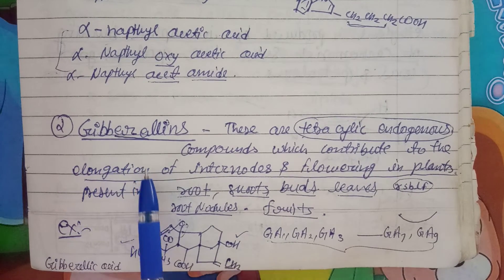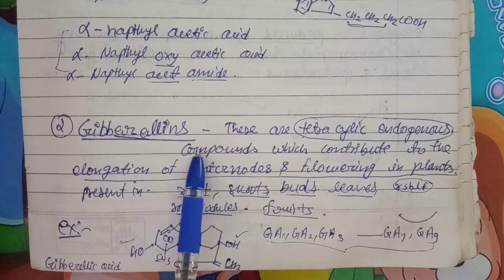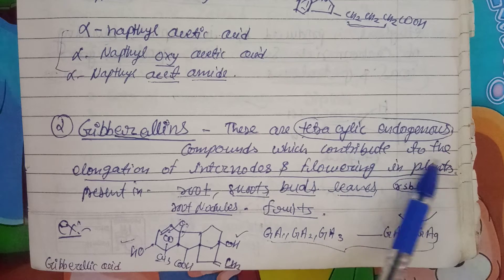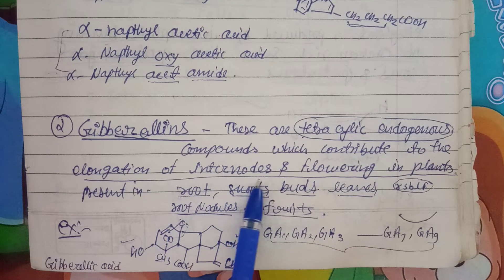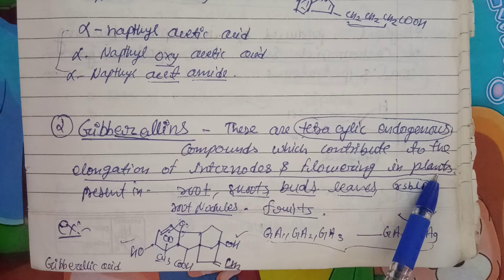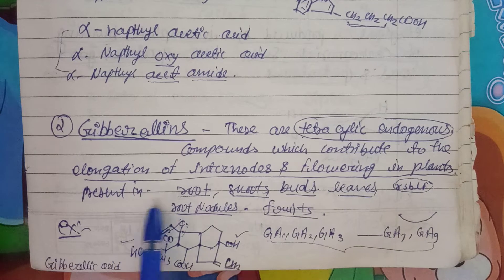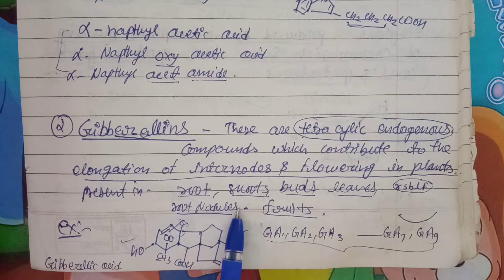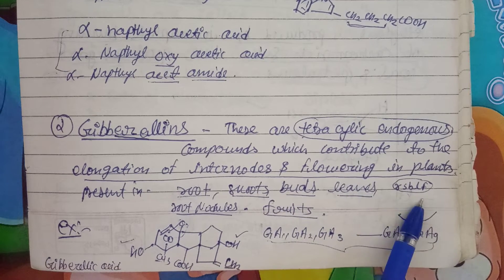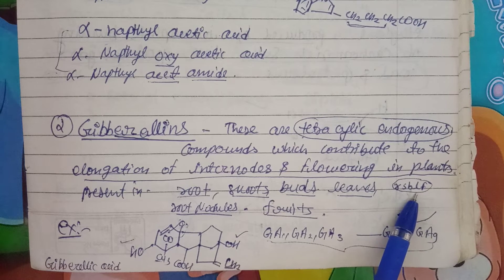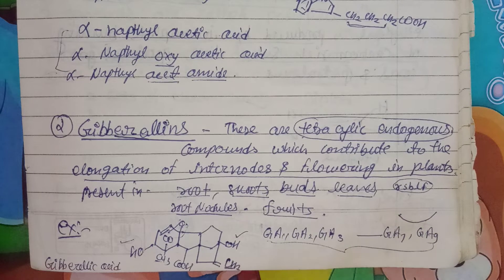Coming to the second one: Gibberellins. When we talk about Gibberellins, these are the tetracyclic endogenous compounds which contribute to the elongation of internodes and flowering in plants. These will be present in the root, shoots, buds, even leaves, root nodes, and fruits. The formula I have written is RSBLF — root, shoot, bud, leaf, fruit — so in that way you can remember it.